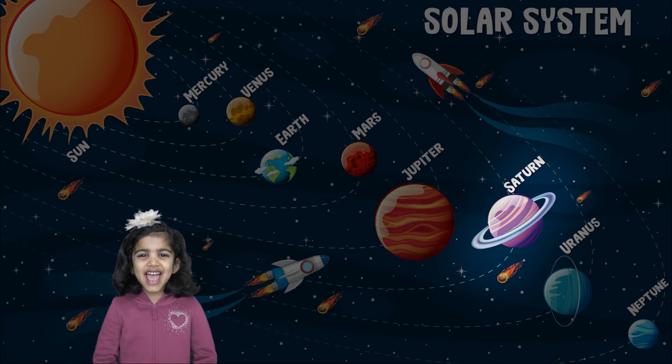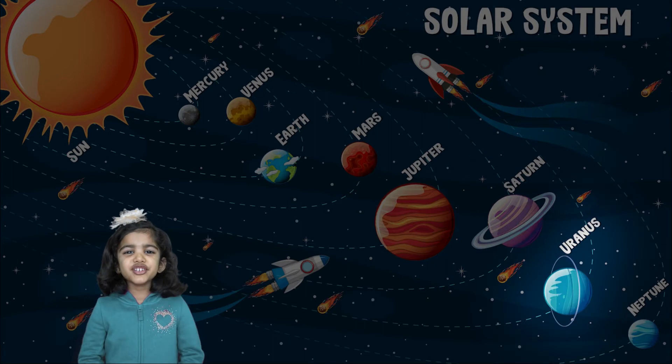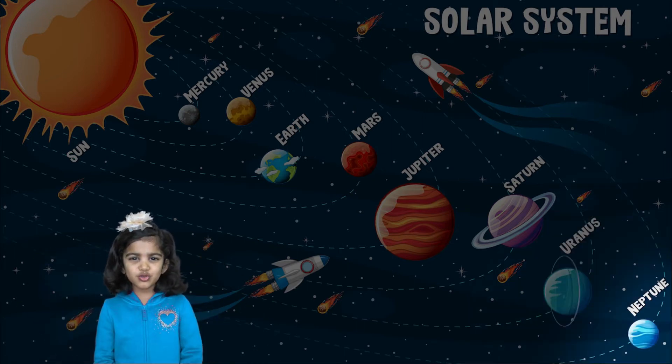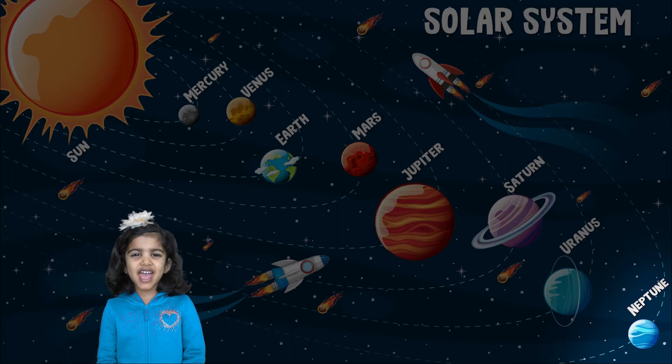Saturn, Saturn is the planet with the rings around it. Uranus, Uranus is very cold and cloudy. Neptune, Neptune is made of gas.